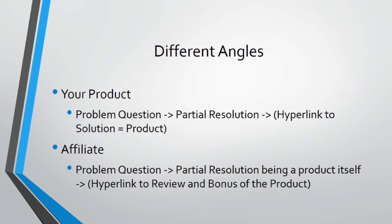The bonus is there to give incentive for people to buy through your affiliate link rather than someone else's. If you are in a general niche, you can do problem question, partial resolution, and this model here — but instead of directing them to a review and bonus, just direct them to the review. At the review, you can compare the product with others to help them make a better decision. With that said, let me jump back to Facebook Ads Audience Insights so we can dig out some angles and questions you can put into your content.